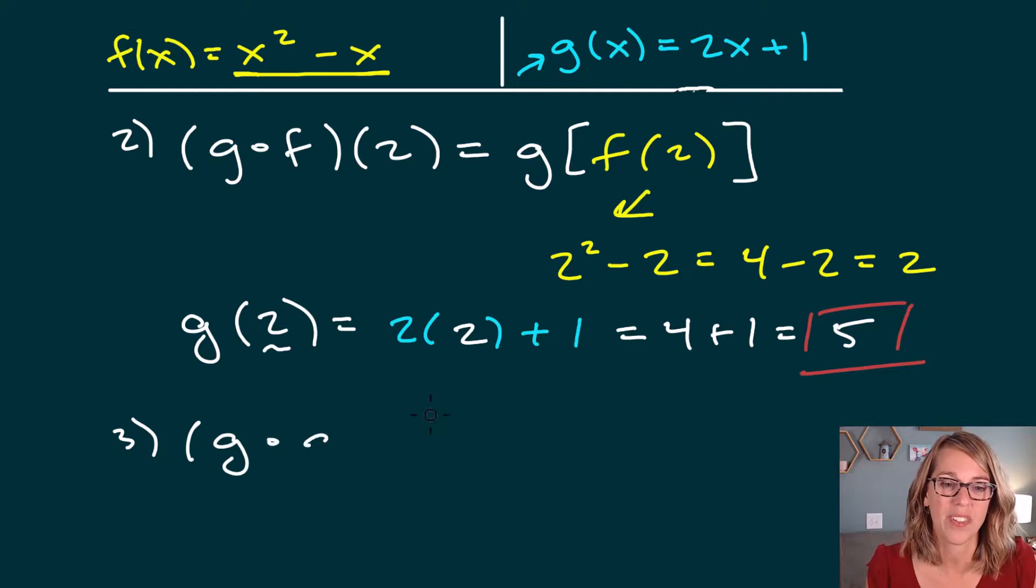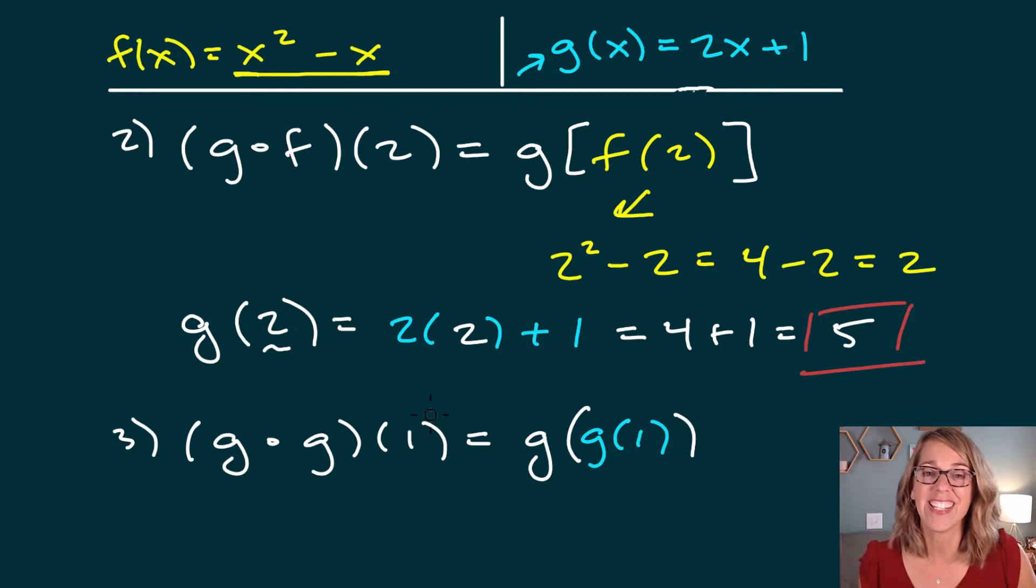For this last one, let's do g composed with g of 1. So I'm going to rewrite this as g of g of 1. I'm working this parentheses inside out. So I'm going to focus on the g of 1 first. Well, what does g do? g takes 2 times the input. So 2 times 1 plus 1. So that's going to be 2 plus 1, which is equal to 3.